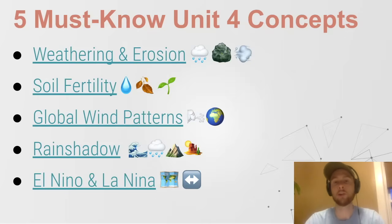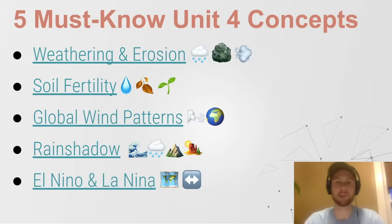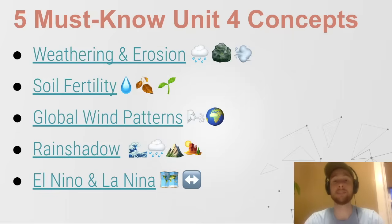We've got global wind patterns — a really tricky topic to explain quickly. If you think this is a weak point of yours, definitely watch that video. Remember your Easterlies and Westerlies: wind blows from east to west between 0 and 30 degrees, and west to east from 30 to 60 degrees. Remember the Coriolis effect is the spinning of the Earth, which deflects wind in the opposite direction of our spin.